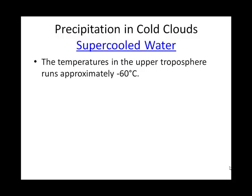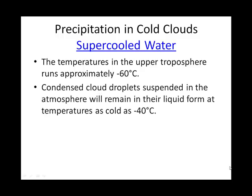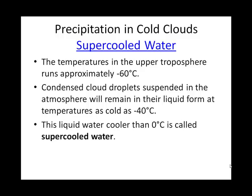It's really pretty cold in the upper part of the troposphere. But one of the neat things about water is it can stay in its liquid state even below 32 degrees Fahrenheit — zero degrees Celsius — the freezing point of water. It will stay liquid up there, and we call that supercooled water. Supercooled water is simply water that's a liquid cooler than it should be.